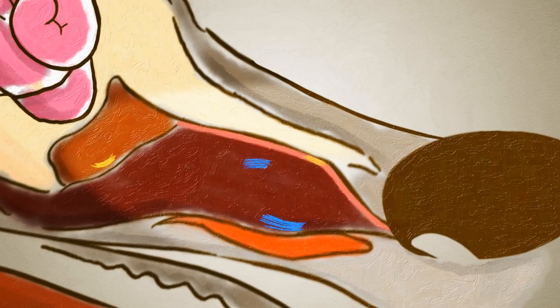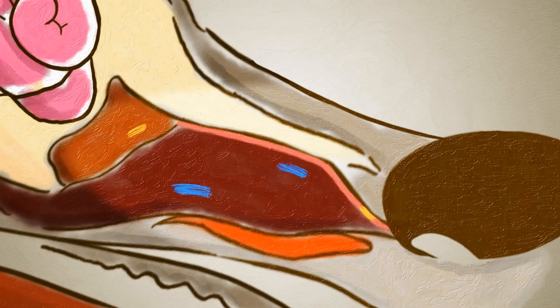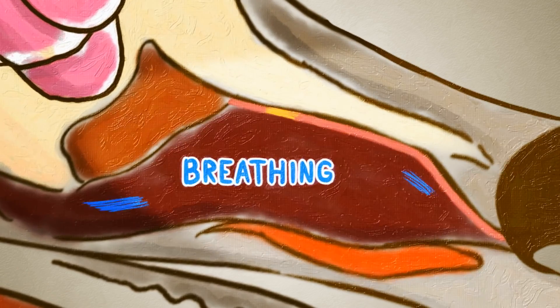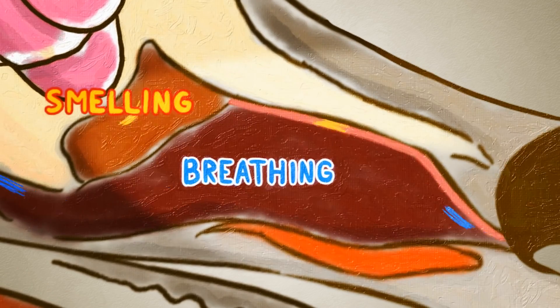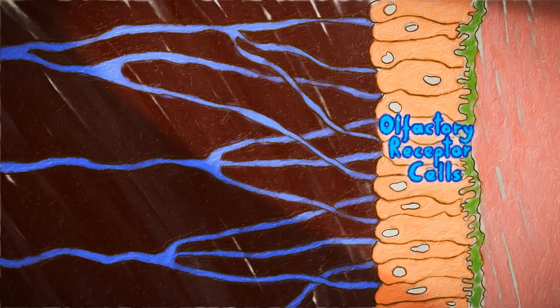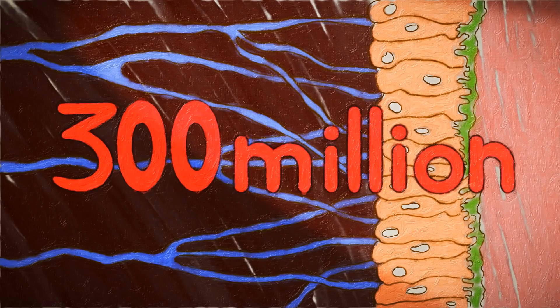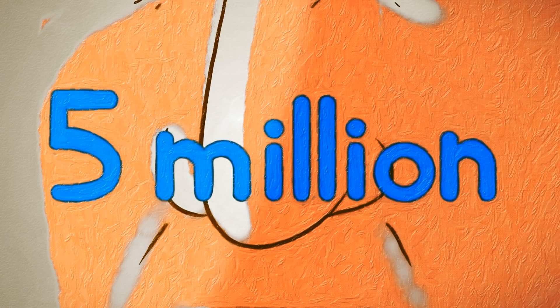As air enters the nose, a small fold of tissue divides it into two separate folds, one for breathing and one just for smelling. This second airflow enters a region filled with highly specialized olfactory receptor cells, several hundred millions of them, compared to our five million.